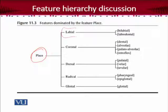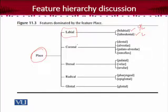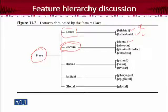So labial means the lip is involved. Within labial, there is bilabial, where both upper and lower lips are involved, and labiodental, where only the lower lip is involved with the upper teeth. Then the coronal feature is that the tip and blade of the tongue are both used. Within coronal, there are various features: dental, when the tongue is touching or moving through the teeth; then alveolar, touched by either the tip or blade; then palatalveolar; and then retroflex.